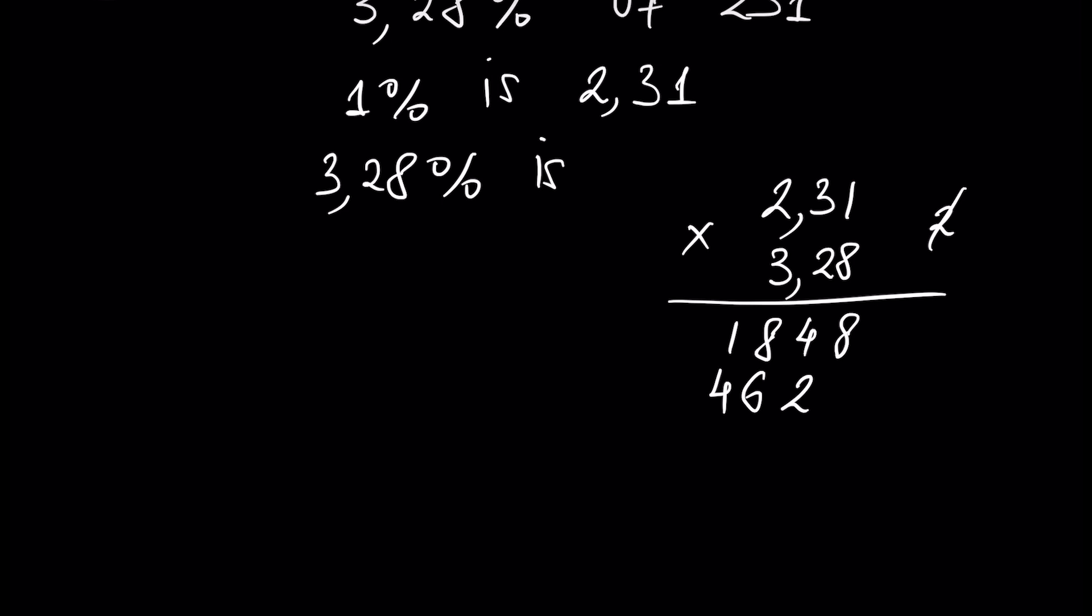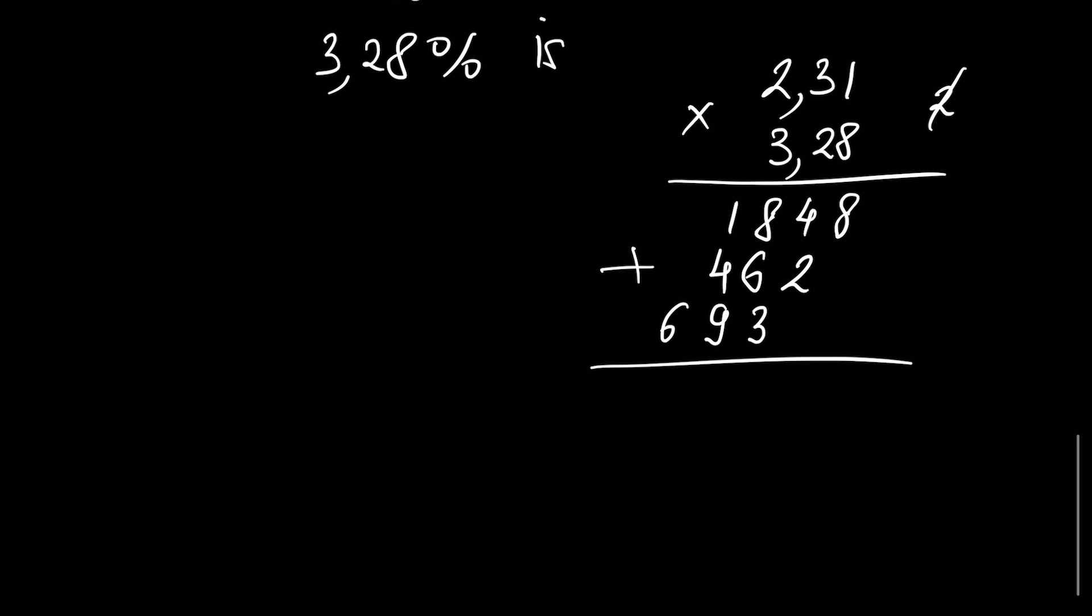3 times 1 is 3, 3 times 3 is 9, and 3 times 2 is 6. Let's add these numbers: we have 8 here, 6, and 8 plus 6 plus 3 is 17. We write 7 and remember 1.